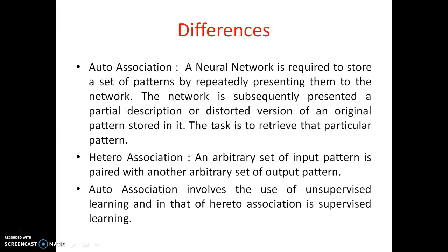Now let's look at the differences between auto association and hetero association. In auto association, a neural network is required to store a set of patterns by repeatedly presenting them to the network. It has to store some input patterns, and that is done by repeatedly presenting them — we keep giving the same data to the network until it is stored.